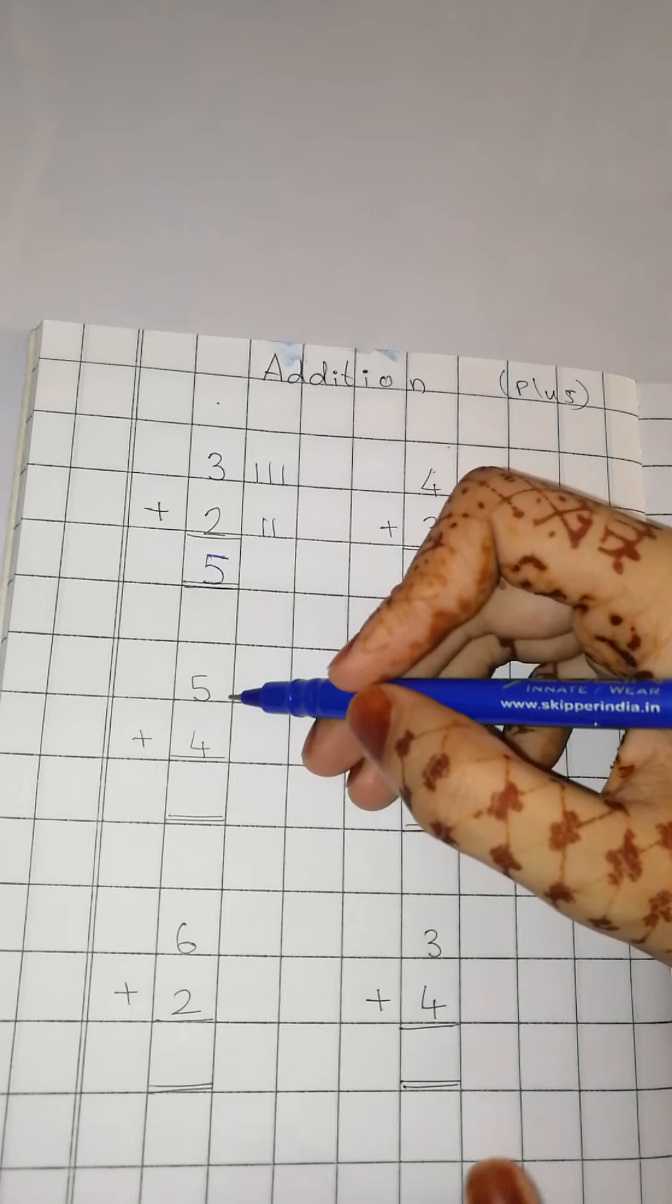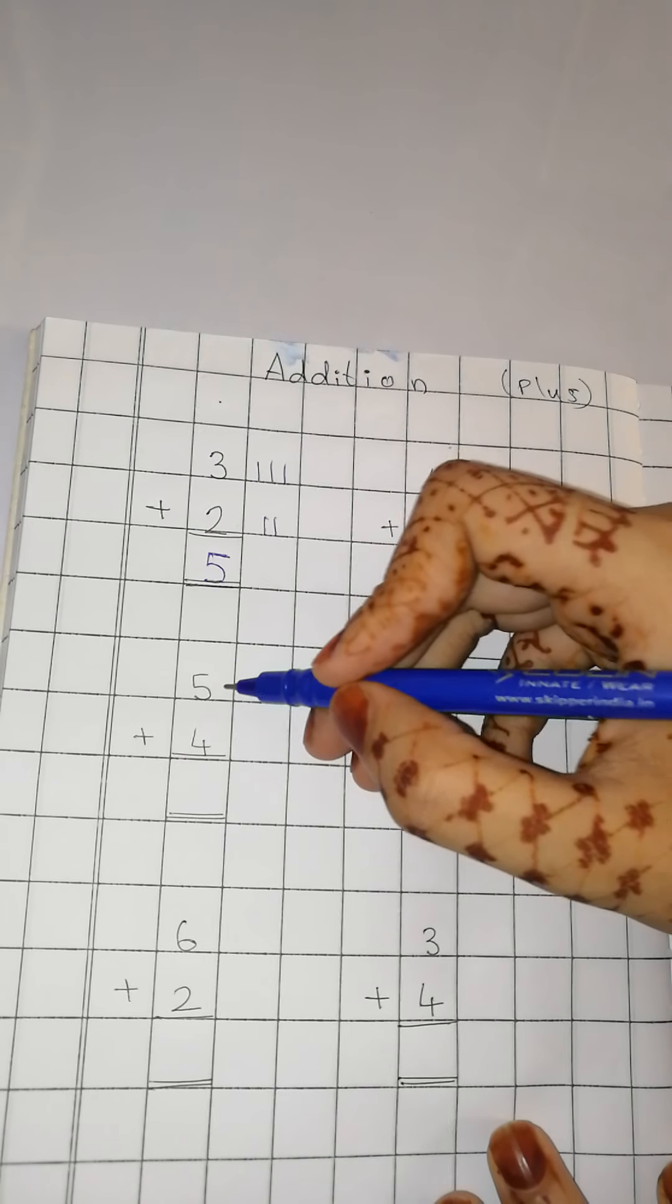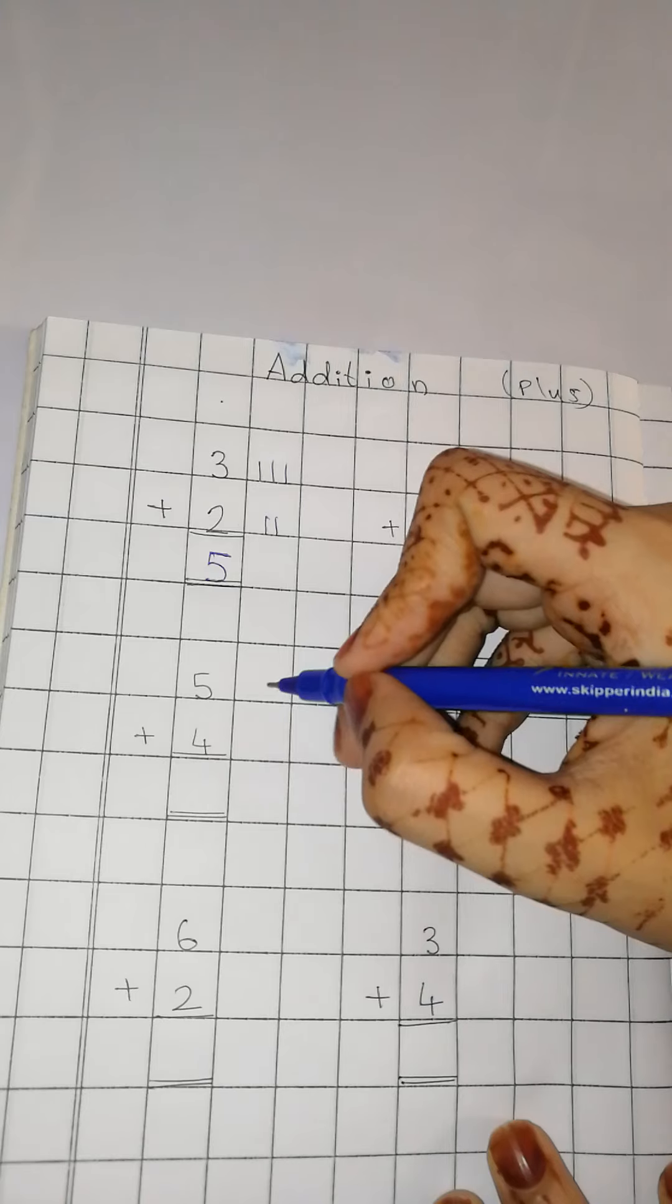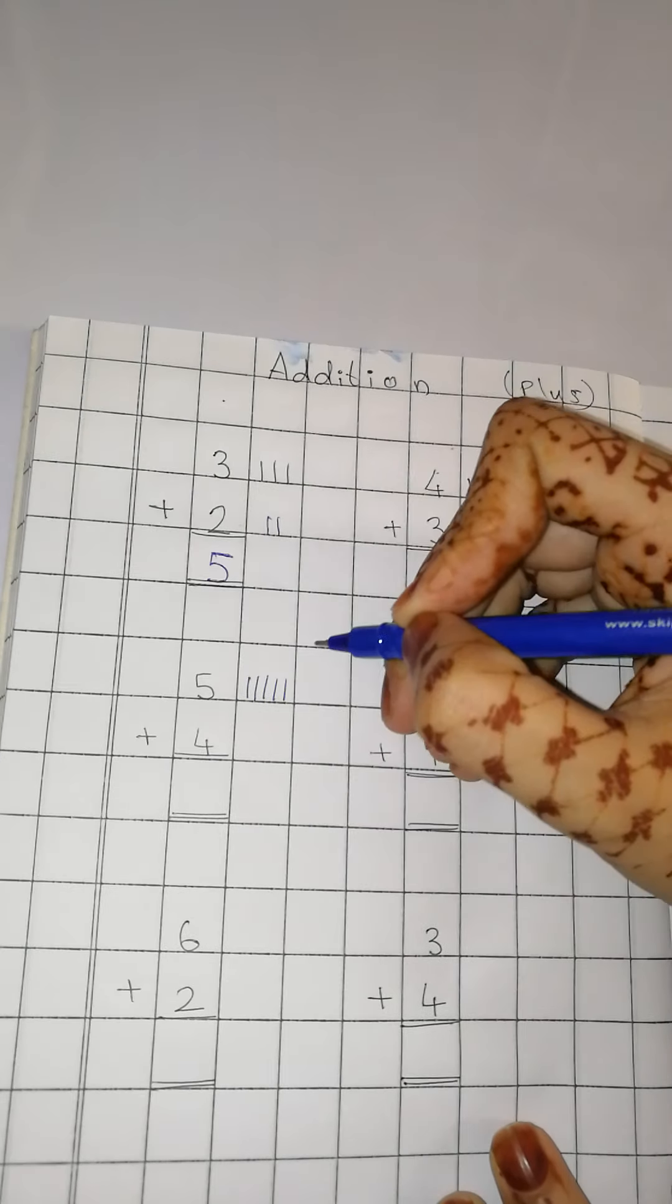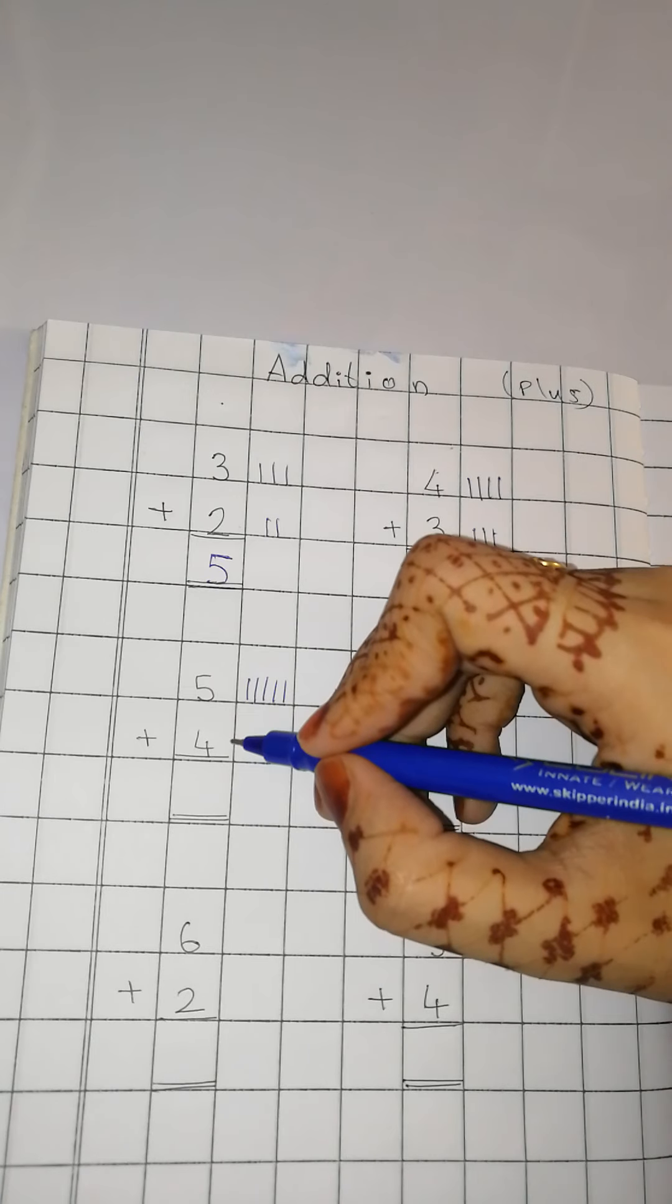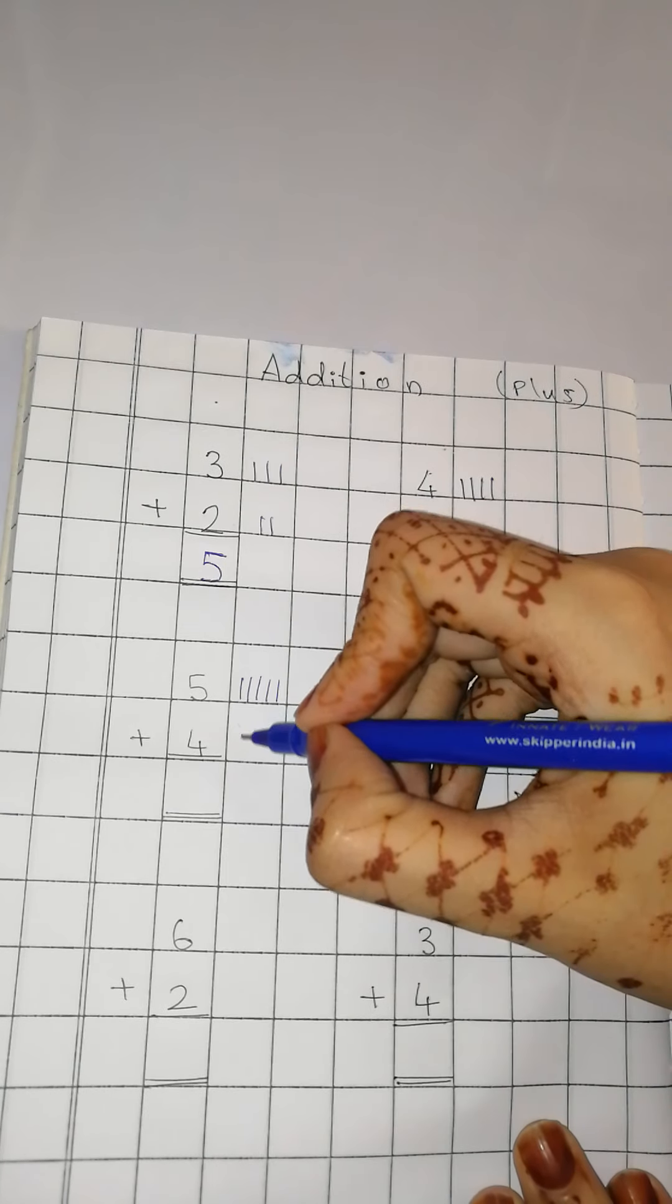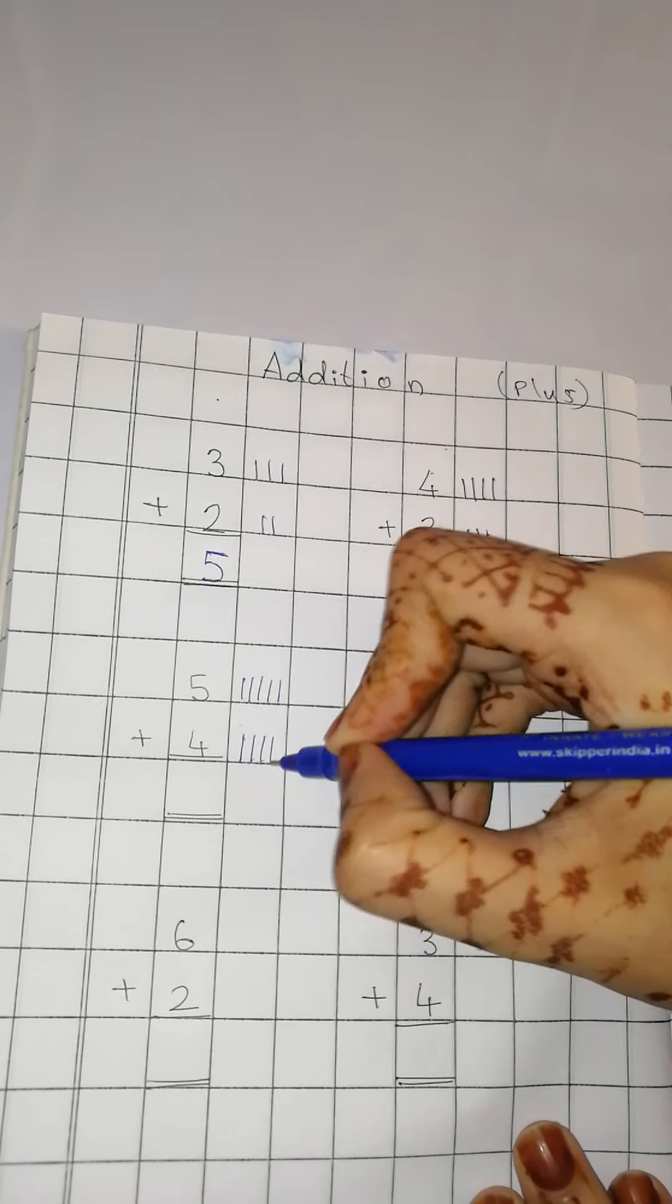Now let us do one more time. This is number 5. So how many lines are we going to draw? 5. 1, 2, 3, 4, 5. And this is number 4. So let us draw 1, 2, 3 and 4 lines.